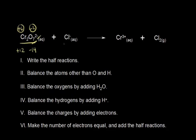Over here is the chloride anion, so the charge is negative 1, meaning the oxidation state is negative 1. The chromium ion is plus 3. And finally, chlorine over here has an oxidation state of 0.